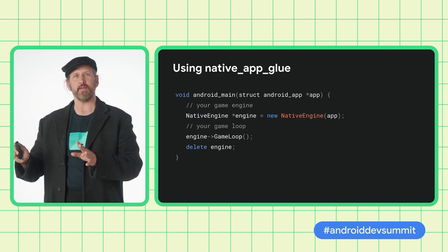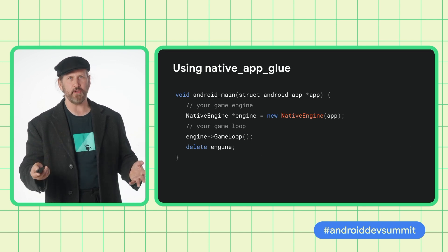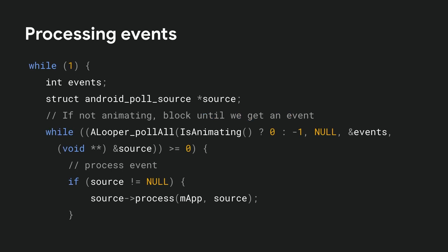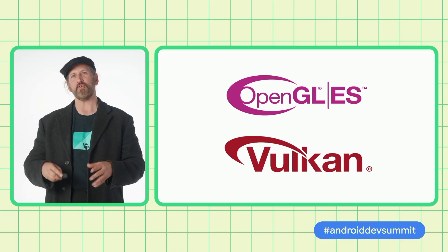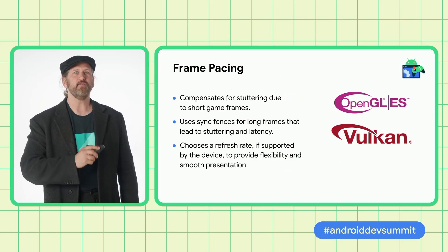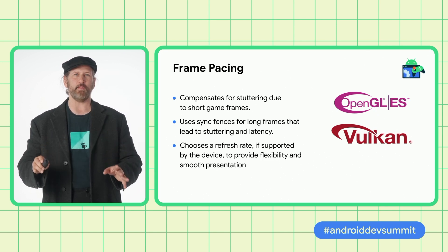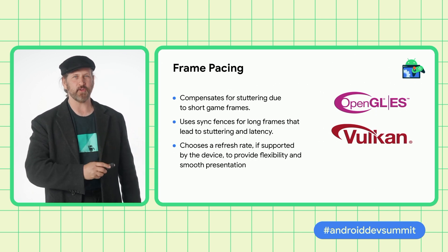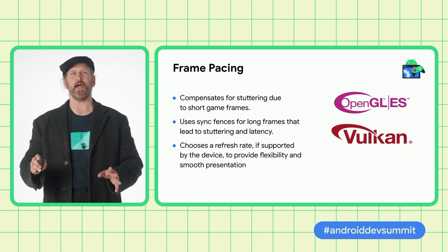We provide a small static native app glue library that offers a different execution model. In this case, Android main gets called in a new distinct thread from the activity's main thread. You can get the lifecycle events from an ALooper that's associated with the thread, and you can also use that same ALooper to listen to file descriptors. Once you've implemented Game Activity, you can then choose to render to your surface using OpenGL ES or Vulkan. Regardless of which API you choose, the Android Frame Pacing library will help you have smoother rendering by synchronizing your game's logic and rendering loop with Android's display subsystem and the underlying display hardware.